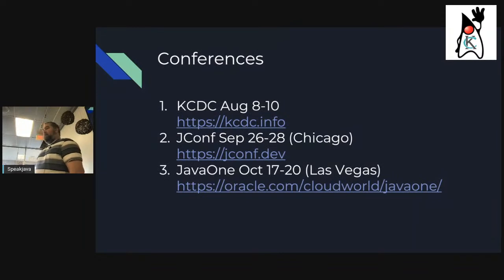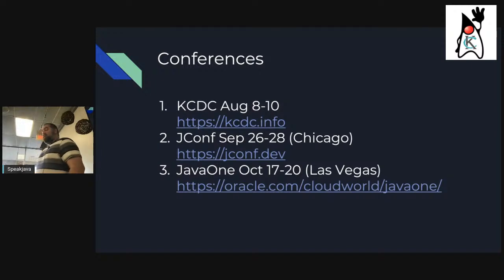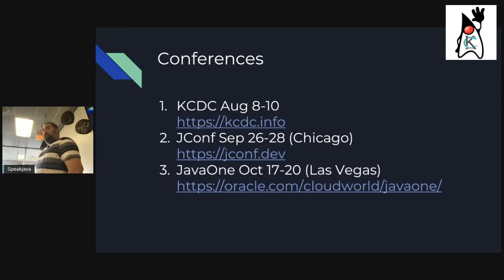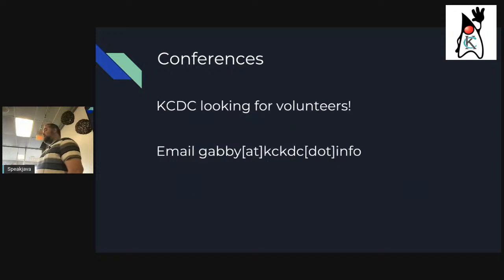Coming up in conferences: KCDC is August 8th through 10th — we're not hosting a meetup in August so people can go to KCDC instead. Jconf in Chicago, September 26th to 28th, is a good one if you travel. JavaOne returns October 17th through 20th in Las Vegas. KCDC is also looking for volunteers — email Gabby at KCDC.info if you want to help.